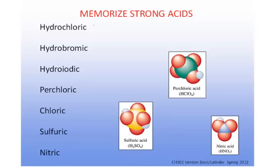In order to predict the behavior of acids or bases in water, you need to recognize whether the acid or base is a strong acid or a weak acid, or a strong base or a weak base. Strong means that it ionizes 100% in water, or dissociates 100% in water, whereas weak will ionize to a limited extent.